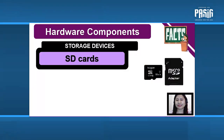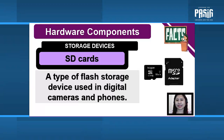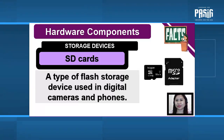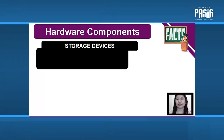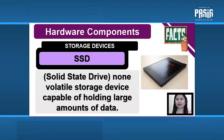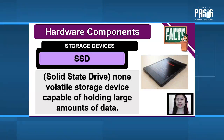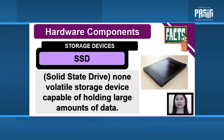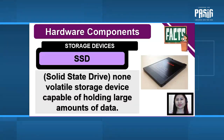Then we have SD cards: a type of flash storage device used in digital cameras and phones. And for the last one, SSD or solid-state drive: a non-volatile storage device capable of holding large amounts of data. It works and performs faster than a hard drive.